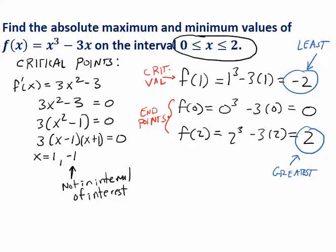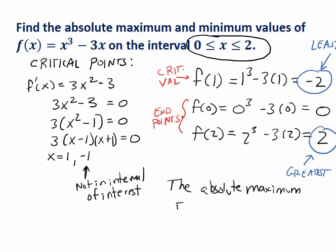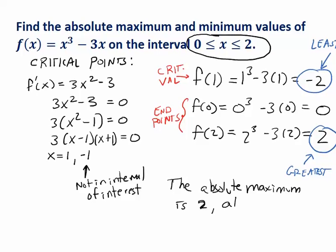And the least output was negative 2. And from this we can conclude that the greatest output on this interval, the absolute maximum, is 2, and that occurs when you plug in the point x equal to 2.